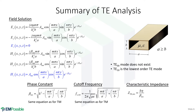For the TE analysis, all six field components are summarized. Since this is the transverse electric mode, the longitudinal component of the electric field must be zero. We solve a single differential equation to calculate the HZ component, then substitute into other equations to calculate the remaining field components. Out of this analysis come the phase constant as a function of mode indices M and N, the cutoff frequency, and the characteristic impedance.